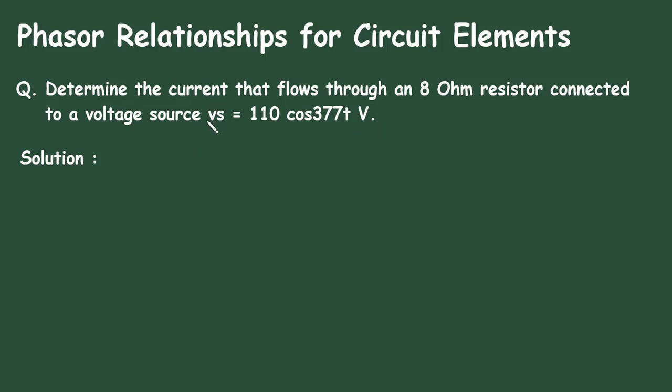We have to determine I of T. The value of resistor is given. Resistance R is equal to 8 ohm.